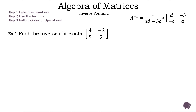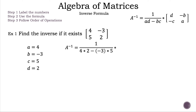Now let's label our numbers. A is equal to 4, B is equal to negative 3, C is equal to 5, and D is equal to 2. Now let's substitute these numbers into the fraction part of our formula. Remember the denominator is the determinant of A. Now we have 1 over 4 times 2 minus negative 3 times 5.